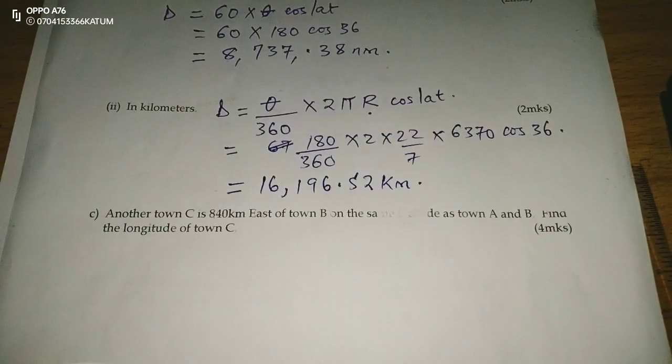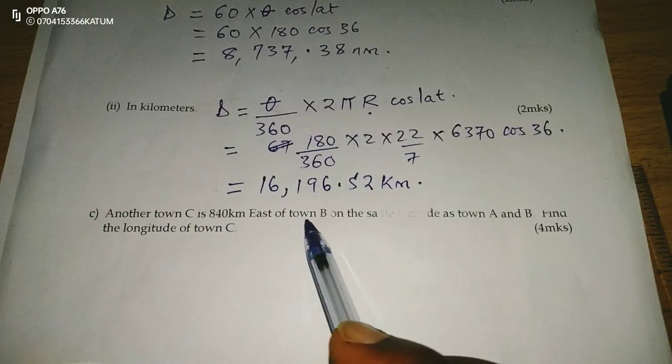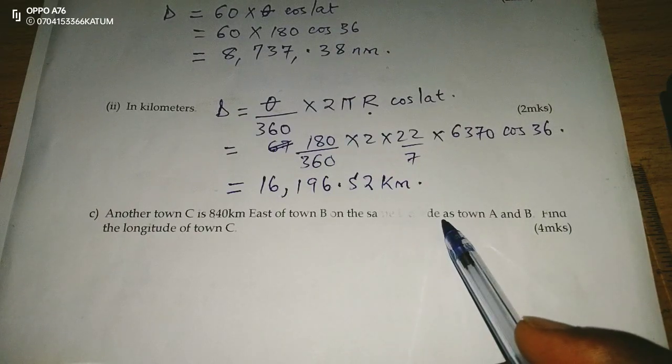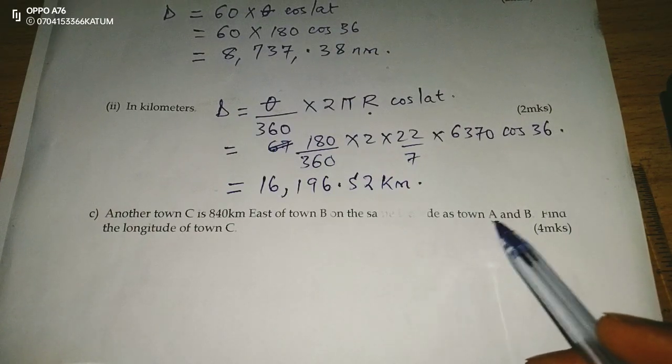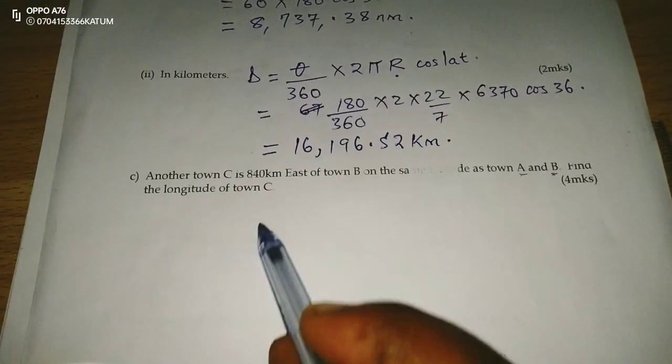Then finally, we got part C. Another town C is 840 kilometers east of town B on the same latitude as towns A and B. Find the longitude of town C.